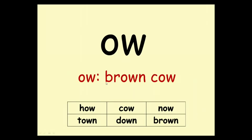This is the OW sound. OW — brown cow. Here are some words: how, cow, now, town, down, brown.